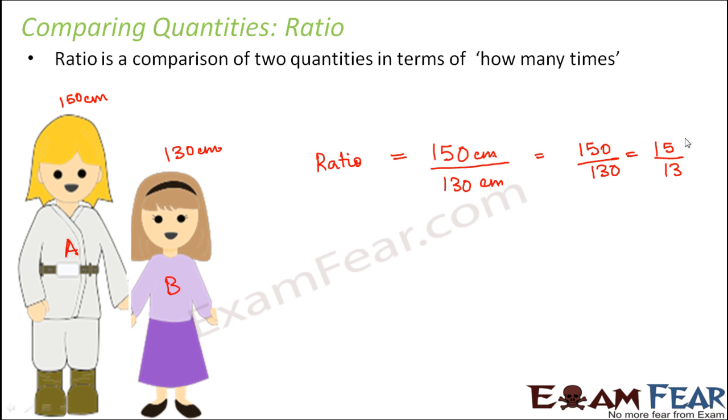And how do we denote ratio? Now we never denote ratio in the form of division like 15 by 13. We denote them in this format, 15 is to 13. So we call this symbol, how do we read this symbol? We call this as is to. So 15 is to 13. That means 15 by 13.